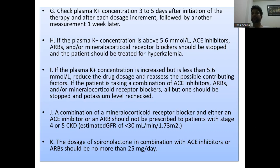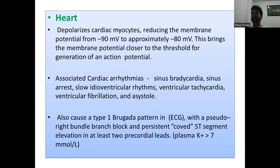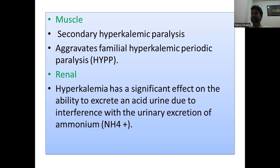Clinical manifestations of hyperkalemia include muscle cramps, weakness, paralysis, drowsiness, low blood pressure, ECG changes, dysarrhythmia, abdominal cramping, diarrhea, and oliguria. In the heart, depolarization of cardiac myocytes shifts the resting membrane potential from minus 90 to minus 80 mV, closer to the threshold for action potential generation, leading to sinus bradycardia, arrest, idioventricular rhythm, ventricular tachycardia, ventricular fibrillation, and asystole. Hyperkalemia may also cause a Brugada pattern on ECG with pseudo-right bundle branch block and persistent ST elevation in at least two precordial leads when potassium is above 7. Hyperkalemic paralysis may also be seen.